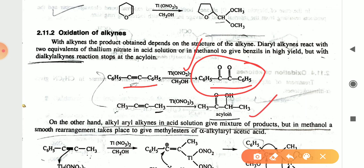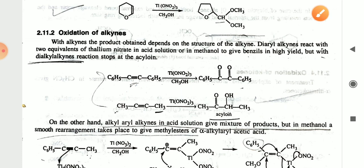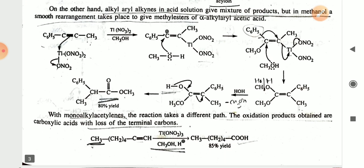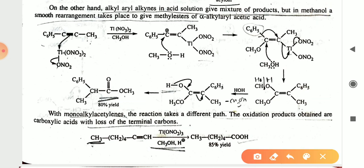Aryl alkynes in acidic solution give a mixture of products, but in methanol a smooth rearrangement takes place to give the methyl ester of alpha-alkyl aryl acetic acid. The mechanism shows the triple bond of the alkyne reacting with thallium nitrate in a methanol solvent.